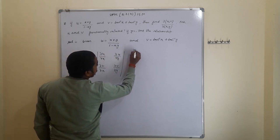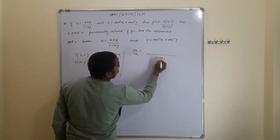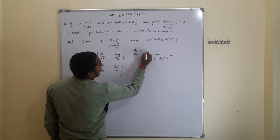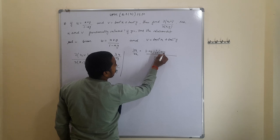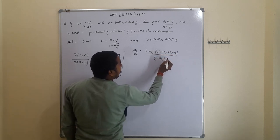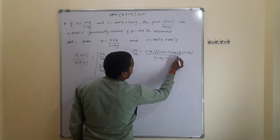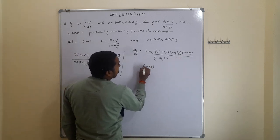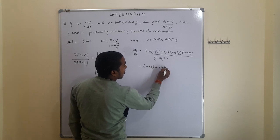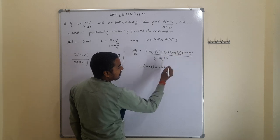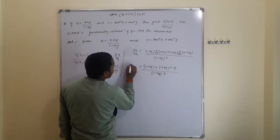To find ∂u/∂x, we use the quotient rule (division method). The numerator is: (1 - xy) · ∂(x + y)/∂x minus (x + y) · ∂(1 - xy)/∂x. Differentiating (x + y) with respect to x gives 1, and differentiating (1 - xy) with respect to x gives -y. This gives us: [(1 - xy)(1) - (x + y)(-y)] / (1 - xy)².